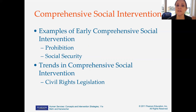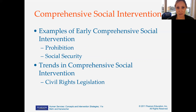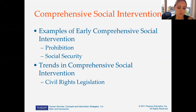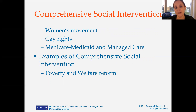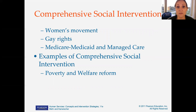Moving from limited social intervention to comprehensive social intervention: the textbook talks about some early comprehensive social interventions, including prohibition and social security, which take bigger structures into account to help individual people. It then discusses trends in comprehensive social intervention, including civil rights legislation, the civil rights movement, the women's movement, and the LGBTQIA movement. Medicare, Medicaid, and managed care are also covered, as well as examples like poverty and welfare reform — what has been done to address those social issues and what we can continue to do.